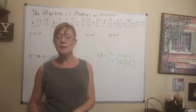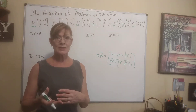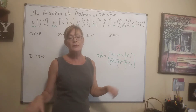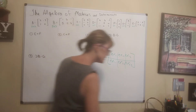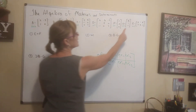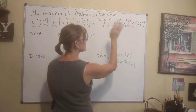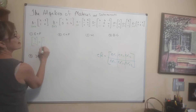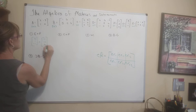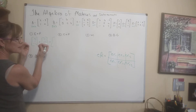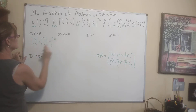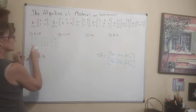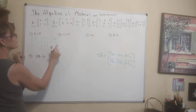Let's go ahead and add and subtract some matrices. If it's not possible, write 'not possible.' For E plus F: E is 3 by 1, F is 3 by 1 — same size, so we can add them. 5 plus 11 is 16, 1 plus negative 6 is negative 5, negative 1 plus 4 is 3. The result is the 3 by 1 matrix [16, -5, 3].